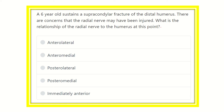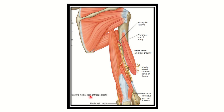This is a direct question about the radial nerve's relation to the humerus at the supracondylar region. The options are: anterolateral, anteromedial, posterolateral, posteromedial, and immediately anterior. Now let's look at the radial nerve.